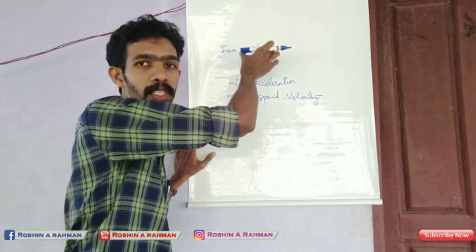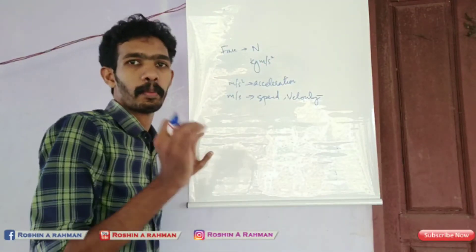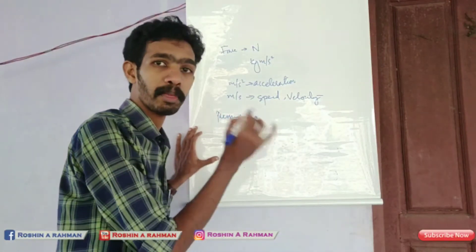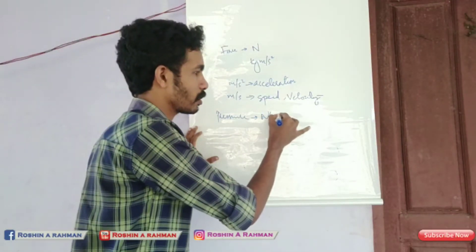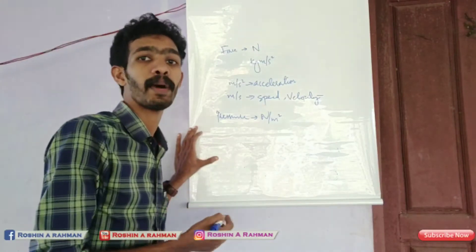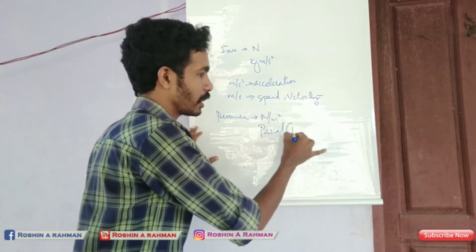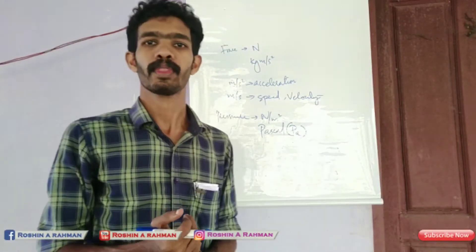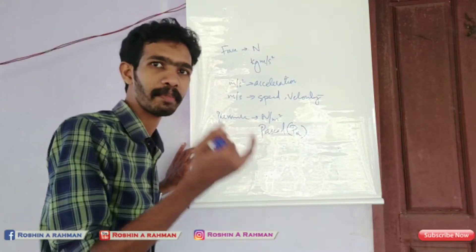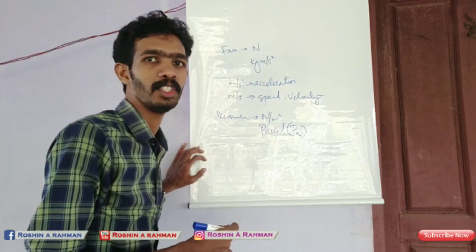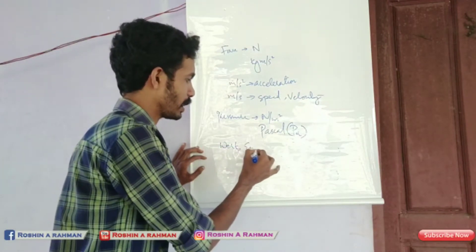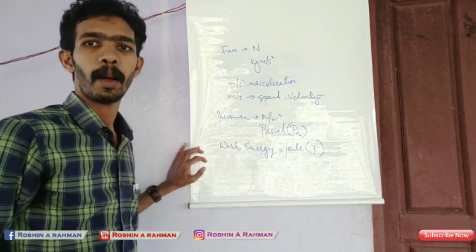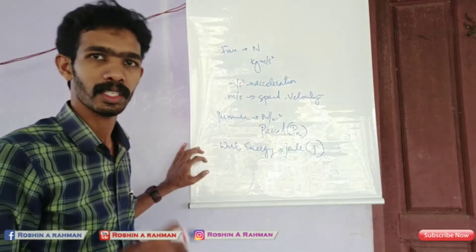Newton is the unit of force. Under pressure, the unit is Newton per meter square. Newton per meter square is called Pascal, and kPa is also used. So the unit of pressure is Pascal. Energy — the unit of energy is Joule, denoted by capital J.